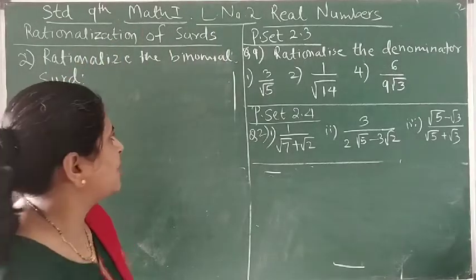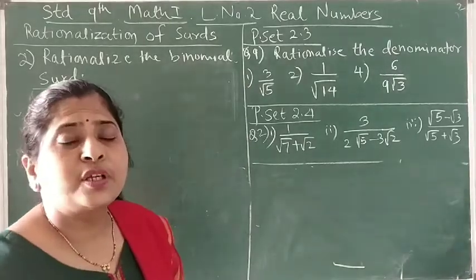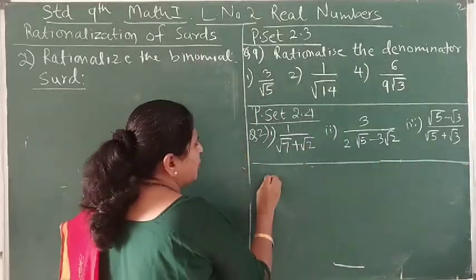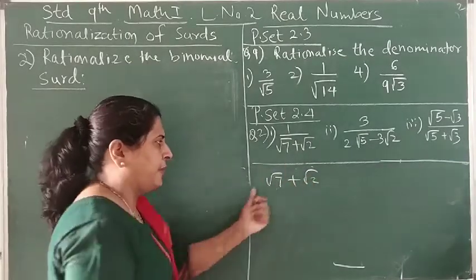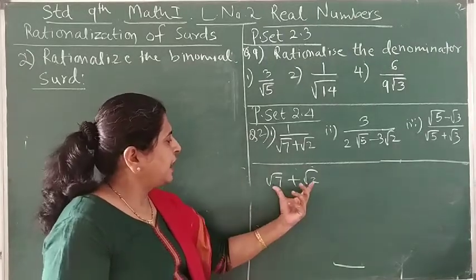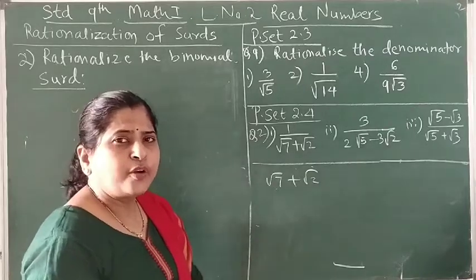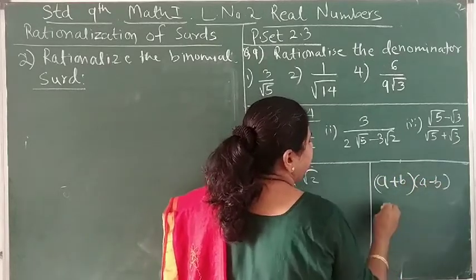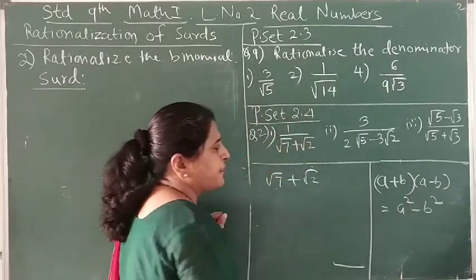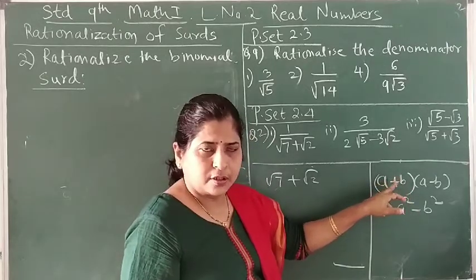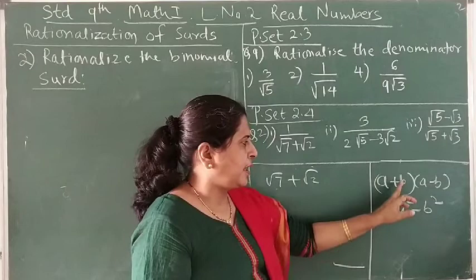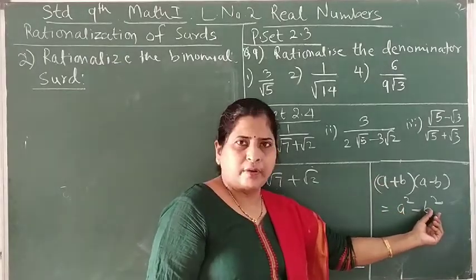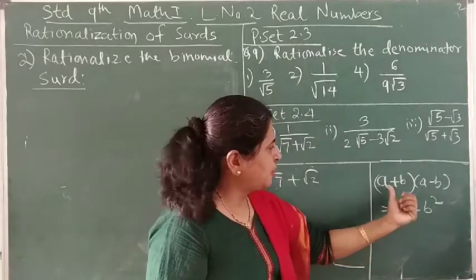Just as we found the rationalizing factor of the monomial, here we will find the rationalizing factor of a binomial. Suppose we take square root of 7 plus square root of 2 — this is the addition of two irrational terms, so we call it a binomial. To make it rational, we take help of the identity: (a + b)(a − b) = a² − b². If a and b are both irrational, then a² and b² are going to be rational, because the square of an irrational number is always rational. Hence their difference is also rational.